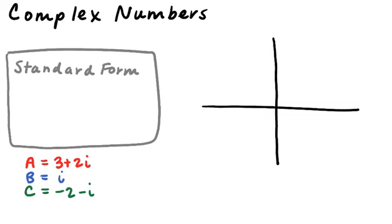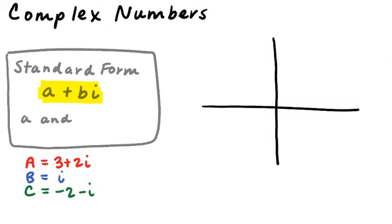We can take imaginary numbers — i, 2i, 3i — and add them to regular numbers, and we're left with a larger set of numbers: the complex numbers. The standard form of a complex number is a plus bi, where a and b are both real numbers. For example: three plus two i is a complex number; i is zero plus one i; and negative two minus i is also a complex number.